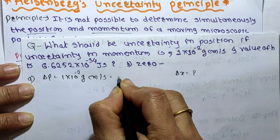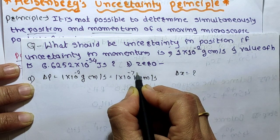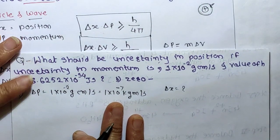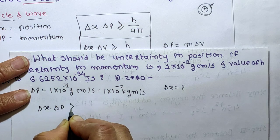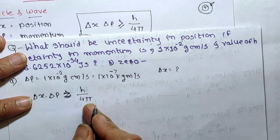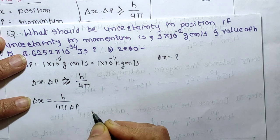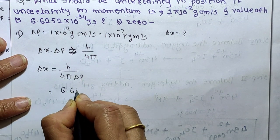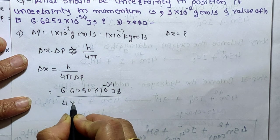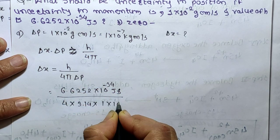We need to convert delta p into kg meter per second. That gives delta p equal to 1 into 10 raise to minus 7 kg meter per second — because grams to kg and cm/s to m/s each shift by 10 raise to minus 2 and 10 raise to minus 2, giving a net factor of 10 raise to minus 4 on 10 raise to minus 2, so delta p equals 1 into 10 raise to minus 7. Our equation is: delta x into delta p ≥ h upon 4 pi. Taking it as equal, delta x equals h upon (4 pi into delta p). Putting in values: h = 6.6252 into 10 raise to minus 34 joule second, divided by 4 into 3.14 into 1 into 10 raise to minus 7.